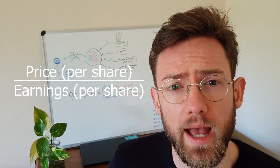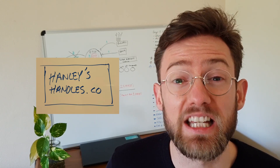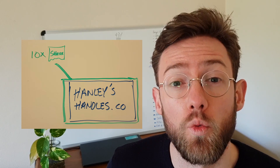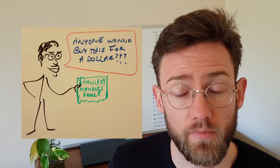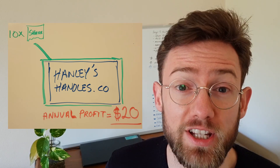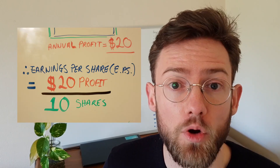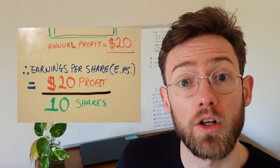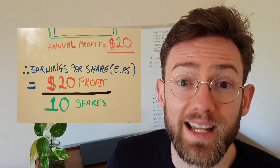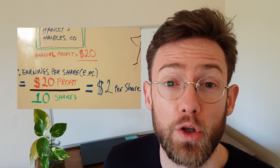So if we have a hypothetical company which has exactly 10 shares and the company is currently priced at $1 per share — so someone in the market is willing to sell me the share for $1 — the company's profit last year was $20. That means that the earnings per share, or the profit per share, is $20 divided by the number of total shares, which in this case is 10 shares. This means that our earnings per share is $2 per share.